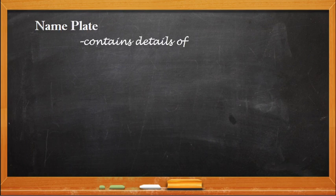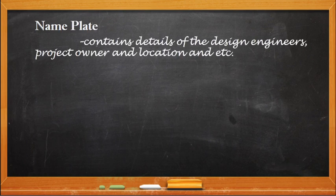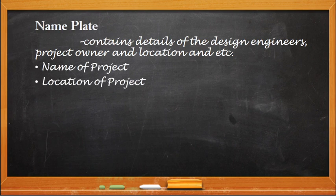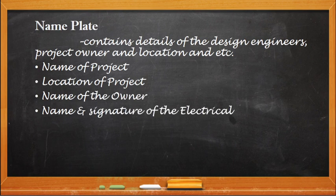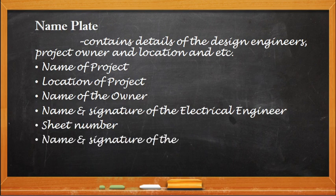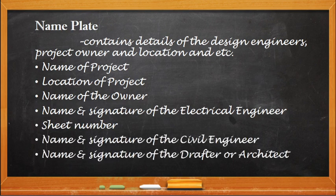Then we have the nameplate. The nameplate contains the data of the design engineers, project owner, location, and other details. It contains the name of the project, the location of the project, the name of the owner, the name and signature of the professional electrical engineer, the sheet number, the name and signature of the civil engineer, the name and signature of the drafter or architect, and the sheet content.